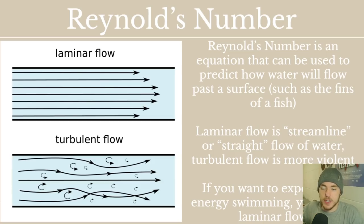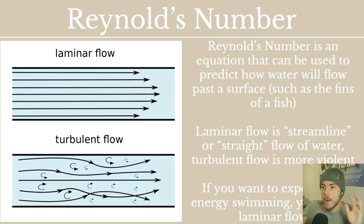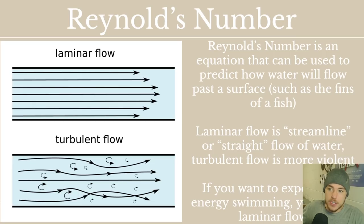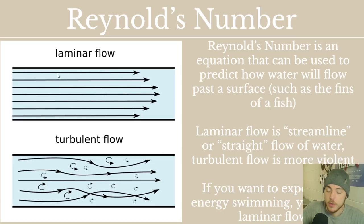The first mathematical concept to talk about is Reynolds number. Reynolds number is essentially an equation we can use to predict how water will flow past a certain surface — generally we'll use it for the whole fish or the fins of the fish. The way that water can flow is either laminar or turbulent, and this relates to the drag forces we just talked about.